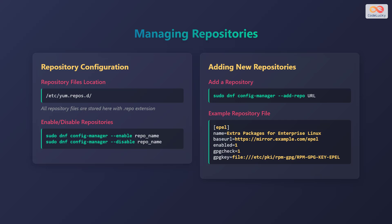Here's an example of a repository file. The section in brackets specifies the repository ID, such as epel. The name field describes the repository. The baseurl field specifies the location of the repository. The enabled field indicates whether the repository is active, where 1 means enabled. The gpgcheck field enables the GPG key check, and gpgkey specifies the location of the GPG key file.